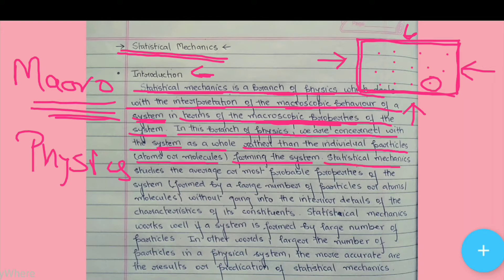Statistical mechanics studies the average or most probable properties of the system formed by a large number of particles, atoms or molecules, without going into the interior details of the characteristics of its constituents.